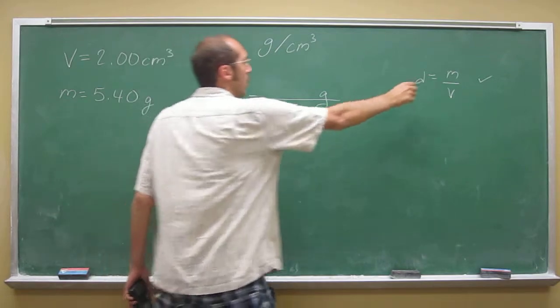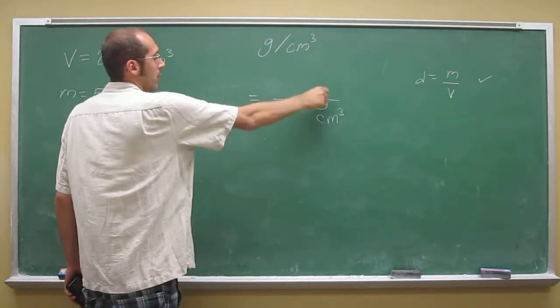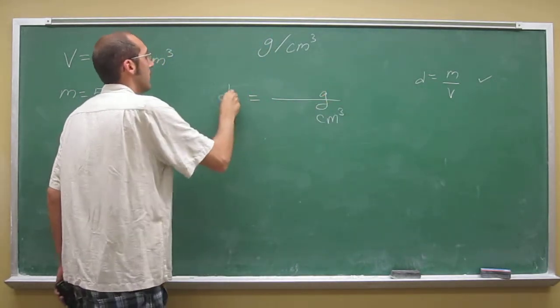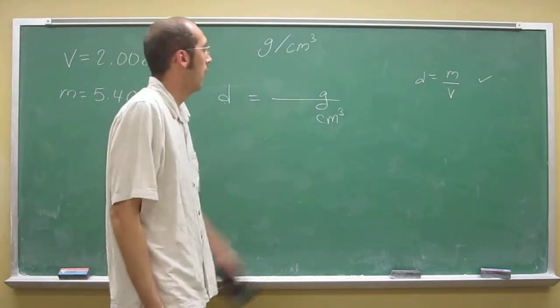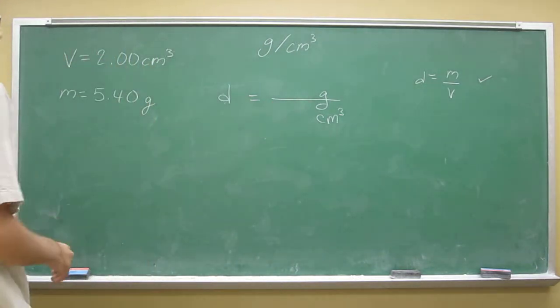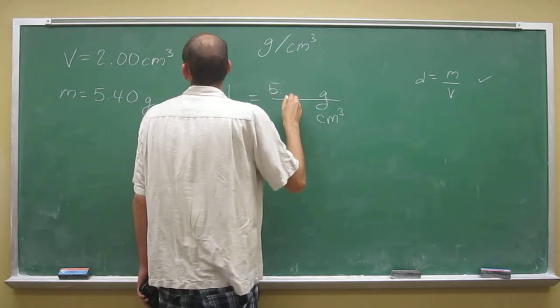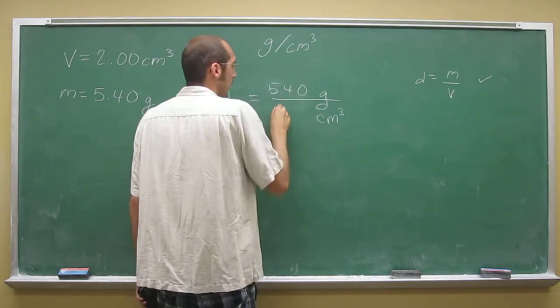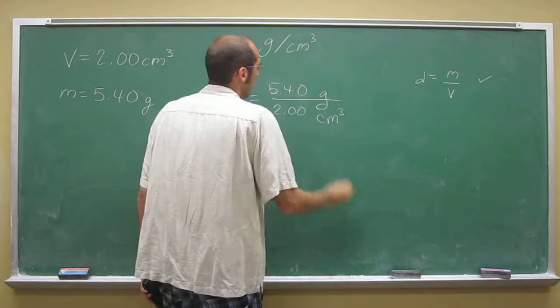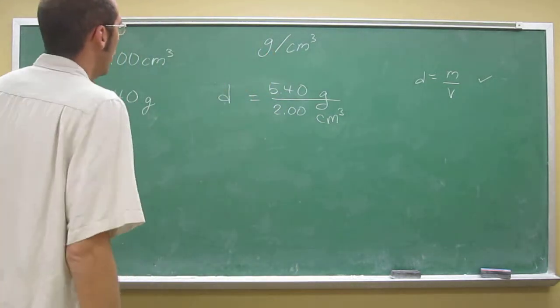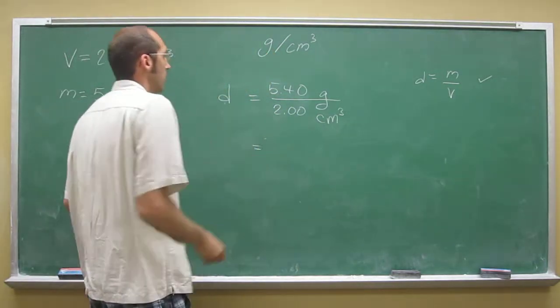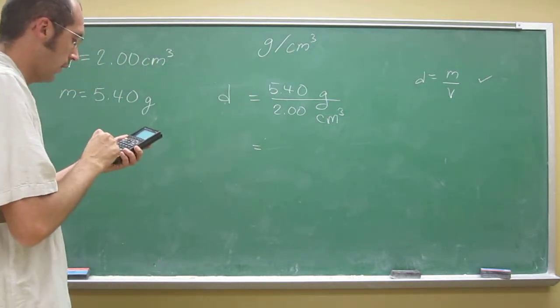If you didn't remember the formula, you could figure it out from what the problem was saying. The density is grams on top of centimeters cubed: 5.40 grams over 2.00 centimeters cubed. Then you just use your calculator and calculate it.